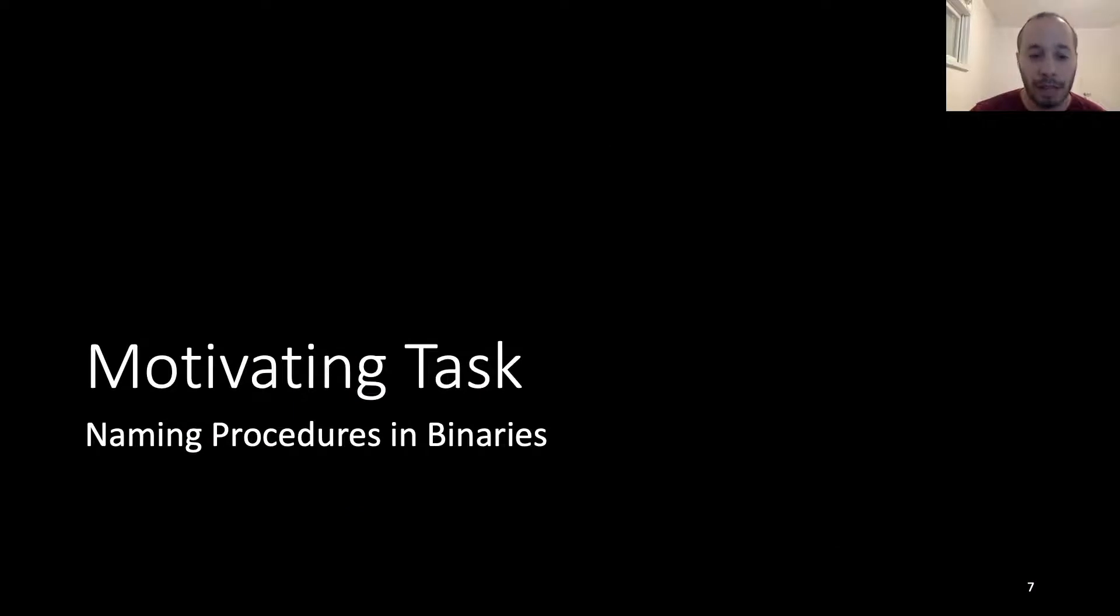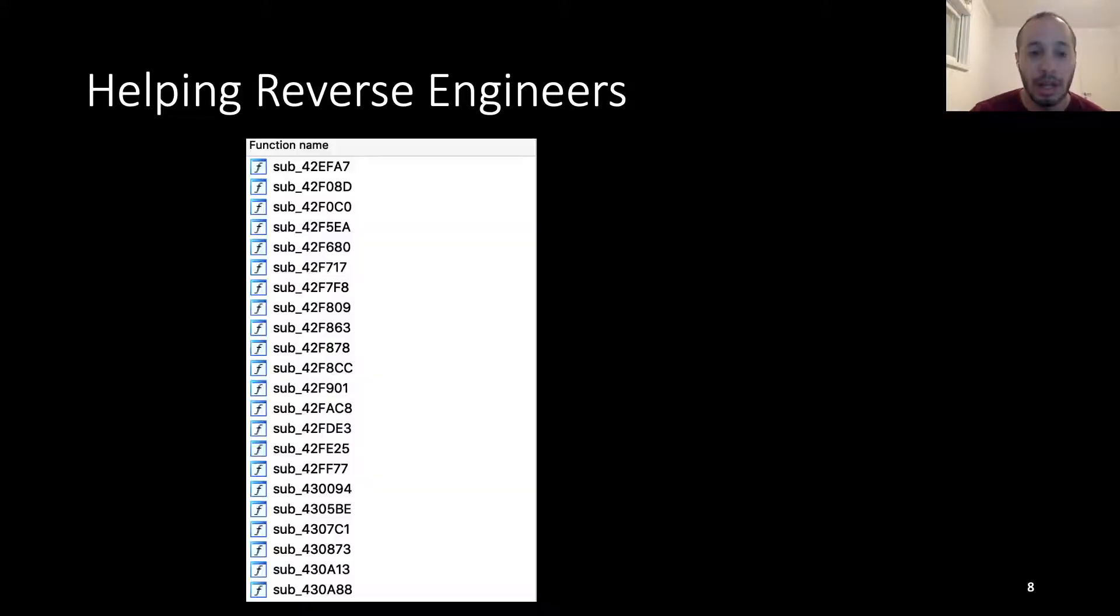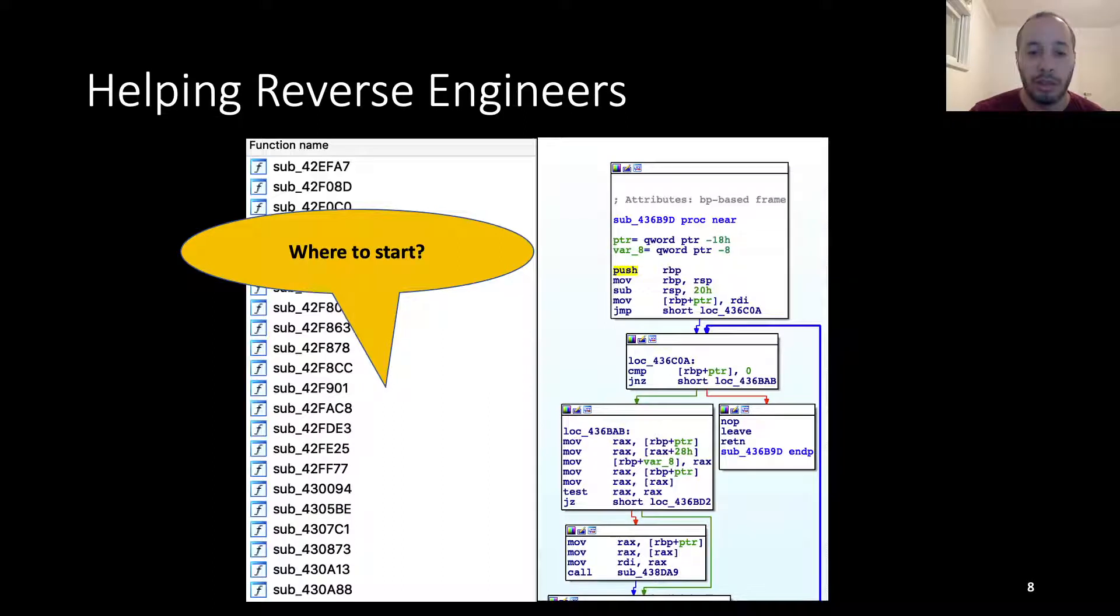Our motivating task is naming procedures in binaries. This is extremely helpful for reverse engineers. Their main problem is they don't know where to start, and wherever they do start, they don't know where they are or what other procedures are involved. This forces them to analyze a large portion of the code before they can answer even the simplest of questions.